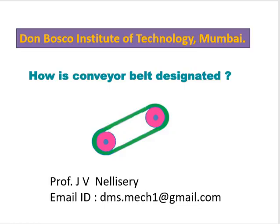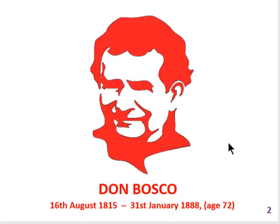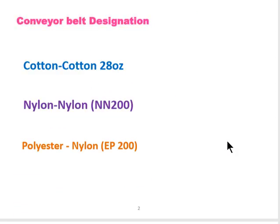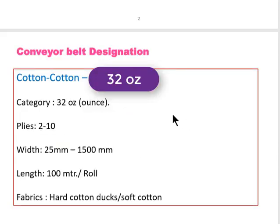Today let us understand conveyor belt designation. A conveyor belt can be designated in the following manner: Cotton Cotton 28 oz (ounce), Nylon Nylon NN 200, or Polyester Nylon EP 200. Let us look into Cotton Cotton first — 'oz' means ounce, and this refers to the thickness of the belt.